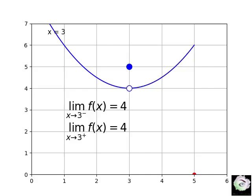Because the right and left limits at 3 are defined and equal to 4, the two-sided limit is also defined and equal to the common value 4, which we represent in symbols as lim as x approaches 3 of f of x equals 4.